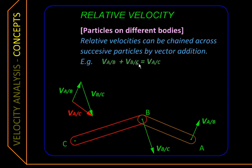So this way we can create chains of relative velocities and get the relative velocity of one point with respect to any other point, provided we know all the intermediate relative velocities.